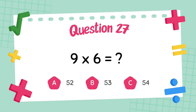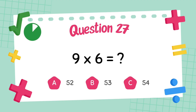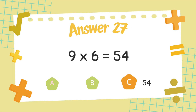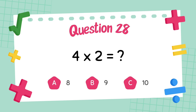What is nine multiply six? The answer is fifty-four. What is four multiply two?